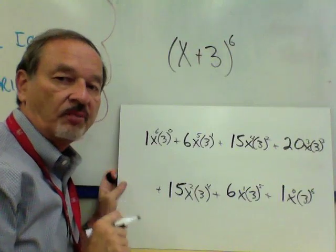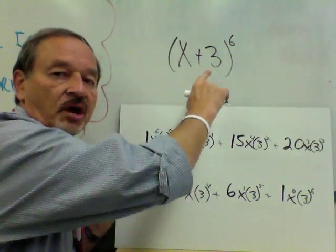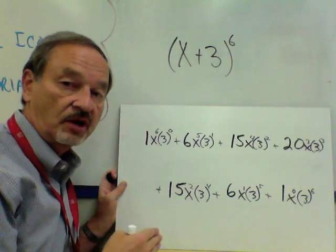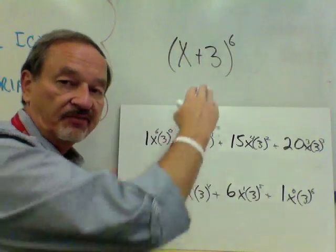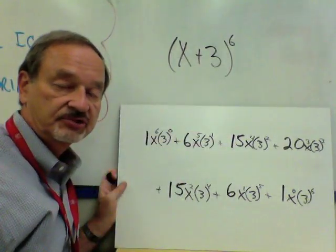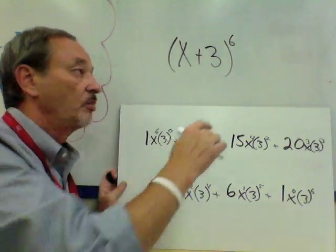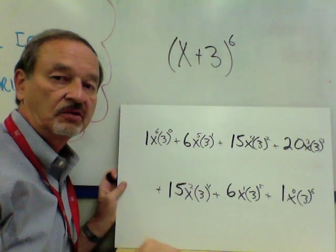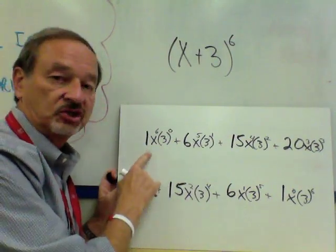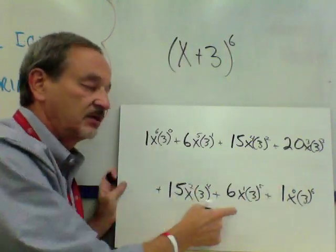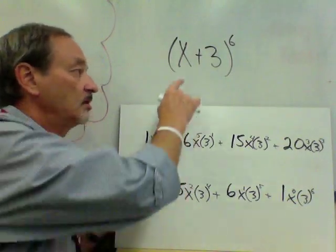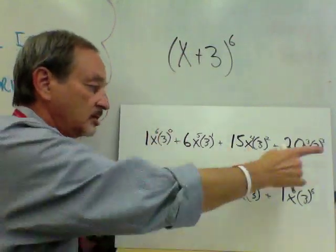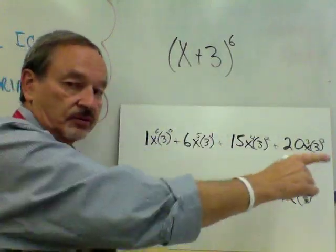Let me quickly recap what we've done so far. We've got the problem x plus 3 to the sixth power — that's called a binomial expansion. We used Pascal's Triangle: the power of 6 led us to row 6, giving us the coefficients 1, 6, 15, 20, 15, 6, and 1. We then attached the first part of the binomial, X, next to each coefficient, and then the second part, 3, in parentheses next to each term.